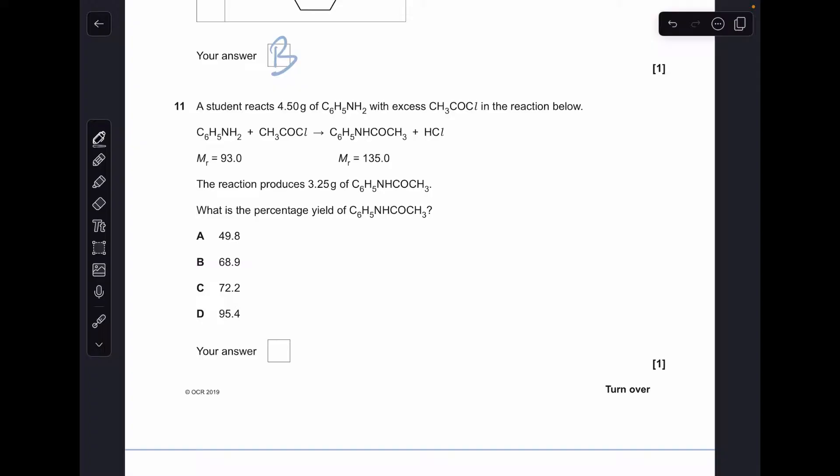Question eleven, just a straightforward percentage yield calculation. I always do my percentage yield calculations in moles. Theoretically, because of the ratio, we should be able to make that many moles of product if it was a hundred percent yield. The percentage yield is the actual moles of product made over the theoretical, so that over that times one hundred. 49.8 percent. But really you didn't need to do that because you can just see by looking at those two numbers that is roughly half of that, and that's the only option that is half. A was the answer.